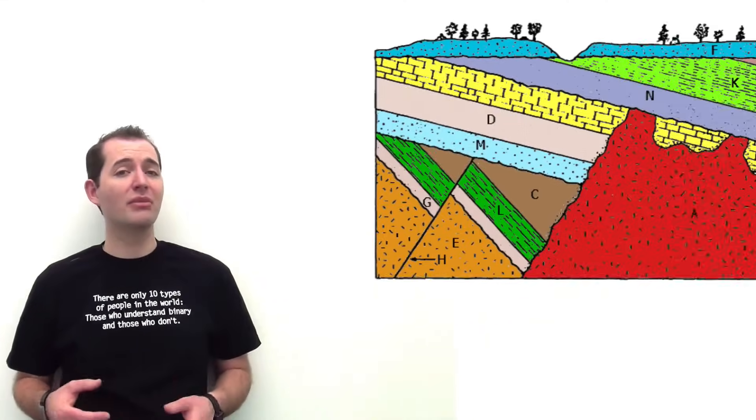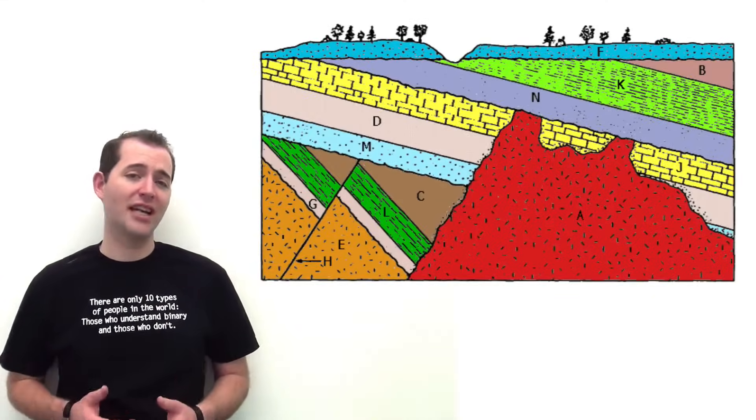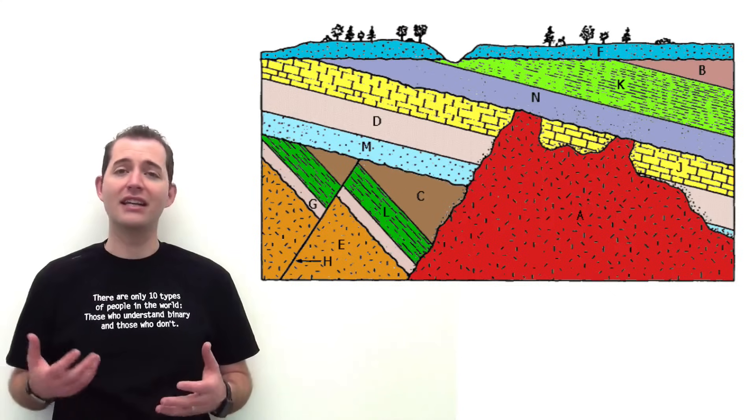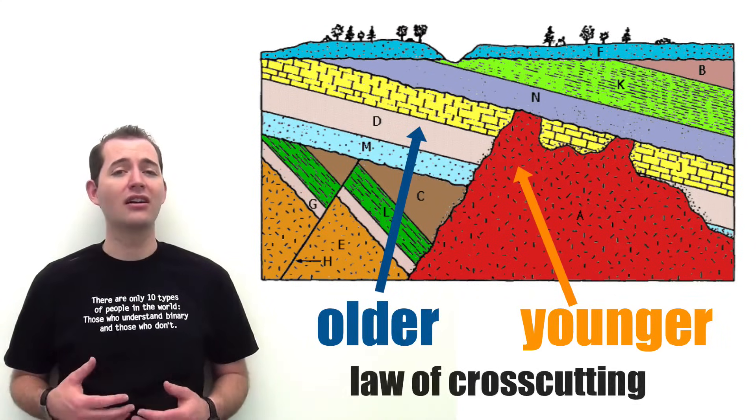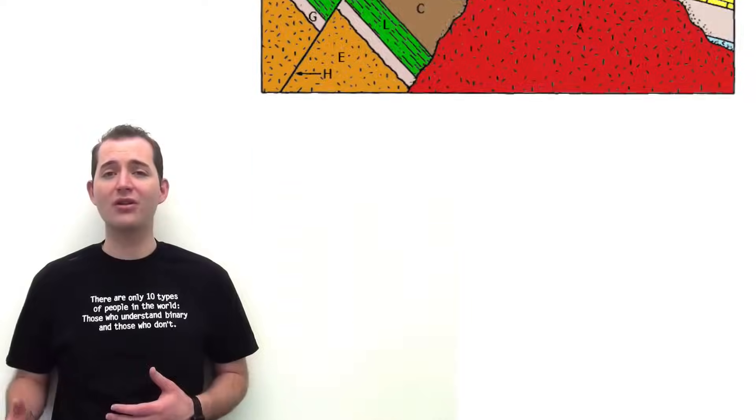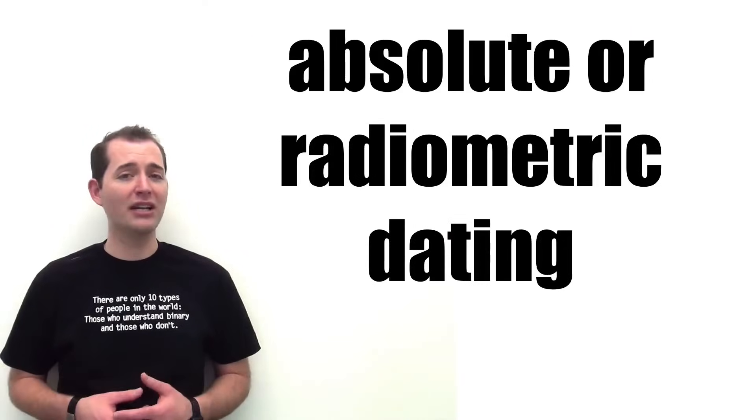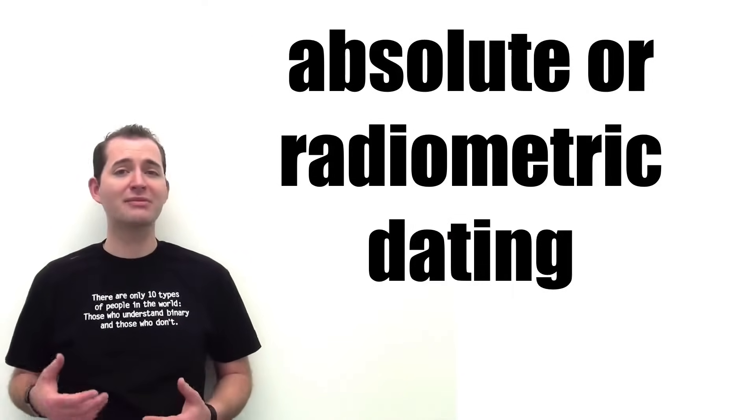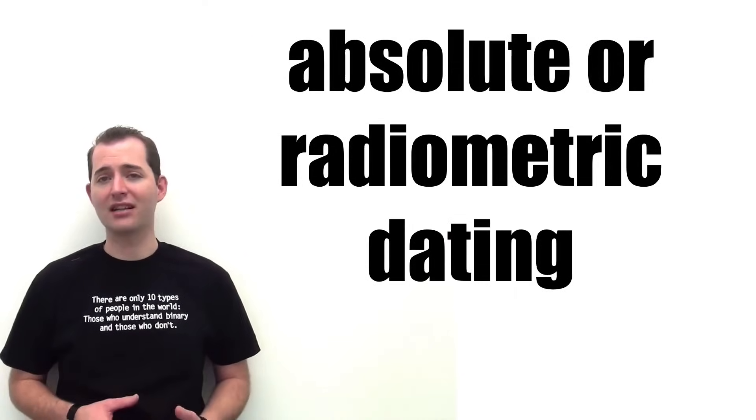Again, we can use these relative rock dating laws to determine the relative or comparative age of rocks to each other. This only means we can tell which is older and which is younger. We must use something else known as absolute or radiometric rock dating to determine specific ages for specific rocks. But these relative rock dating laws are very helpful in helping us determine the sequence of events that led to rock formation.